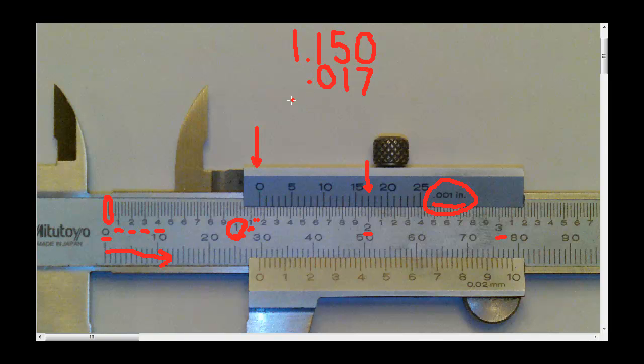or 17 thou. Now, if we add the two together, the size on the vernier caliper should be 7, 6, 1, 1. So the size is 1 inch, 167 thousandths of an inch.